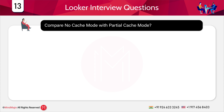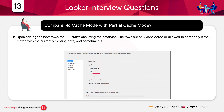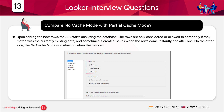The next question asks you to compare no cache mode with partial cache mode. Upon adding new rows, SSIS starts analyzing the database in partial cache mode. Rows are only allowed to enter if they match existing data, and this can create problems when rows come instantly one after the other. On the other side, no cache mode is a situation when rows are generally not cached. Answering this question well will create a very good impression on the interviewer.